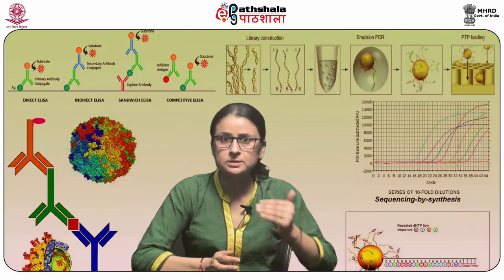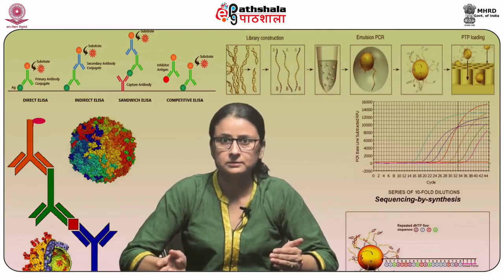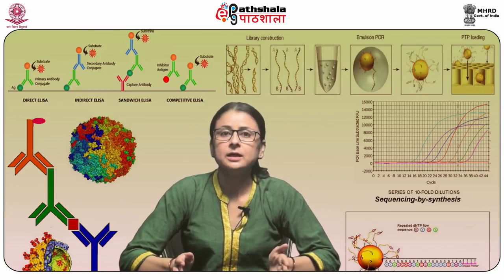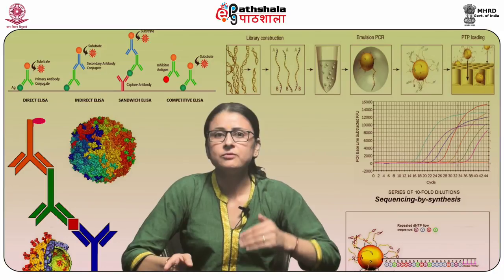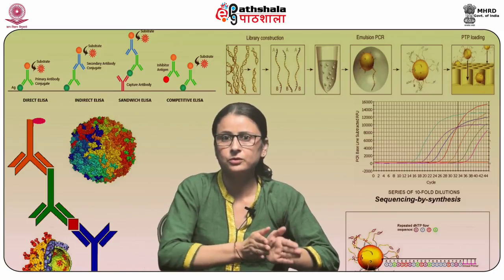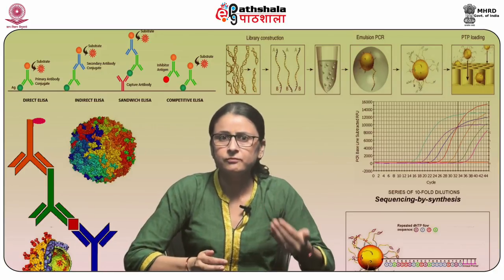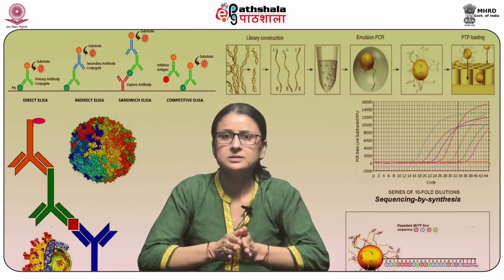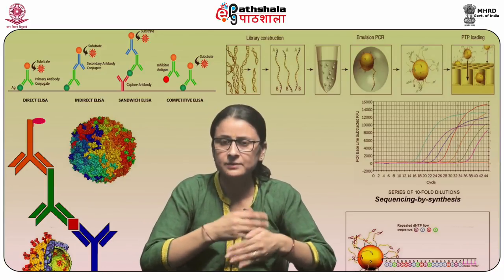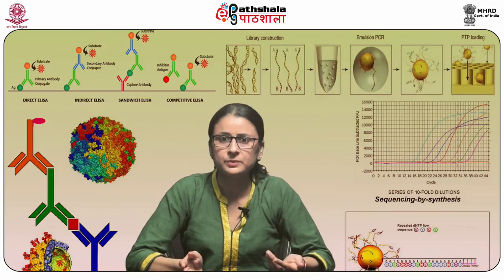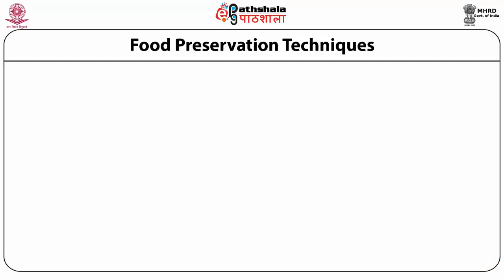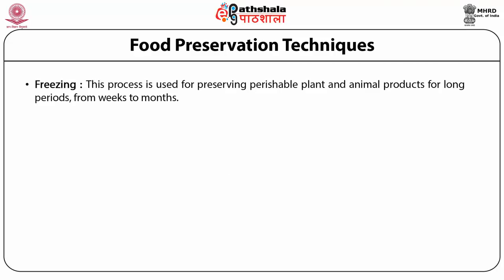Low temperature preservation includes two methods: chilling and freezing. Chilling involves preservation of foods like meat, eggs, fish, and vegetables for only a few days at temperatures between 4°C to 7°C. If foods are kept longer, undesirable changes due to active enzymes and psychrophilic organisms such as Pseudomonas fluorescens and some Micrococcus species take place, causing spoilage. Freezing is used for preservation of perishable plant and animal products for long periods, from weeks to months.